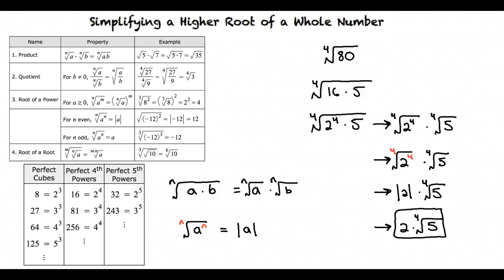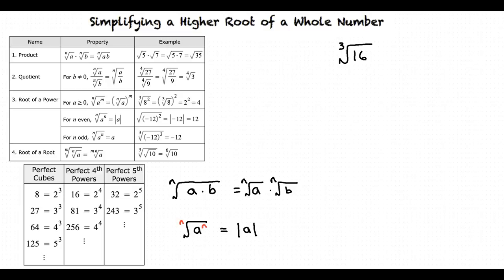Let's look at another example. Write the following in simplified radical form. We start by looking at our table again, this time for perfect cubes. Again, we want the perfect cube to be less than 16, so we choose 8. We now have the cubed root of 8 times 2, which we rewrite as the cubed root of 2 cubed times 2.